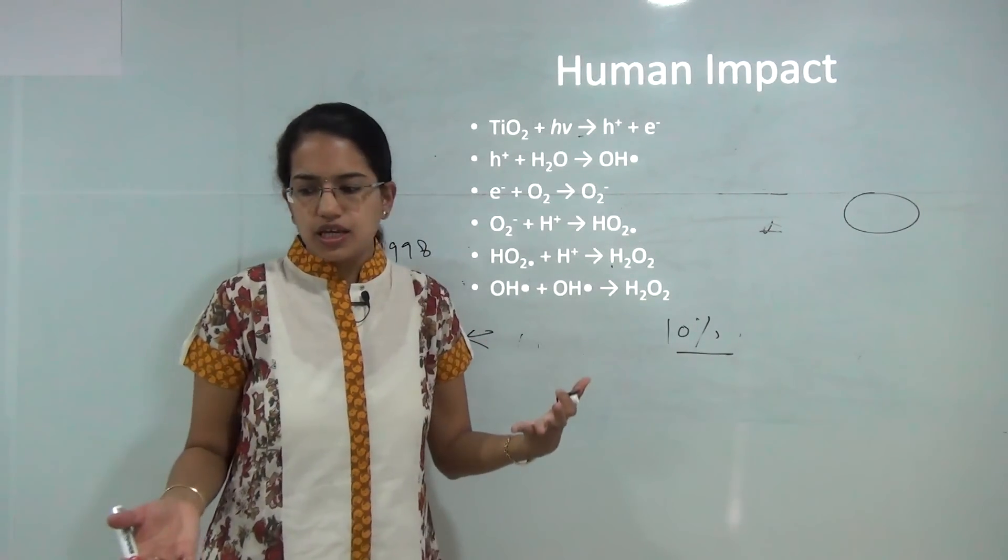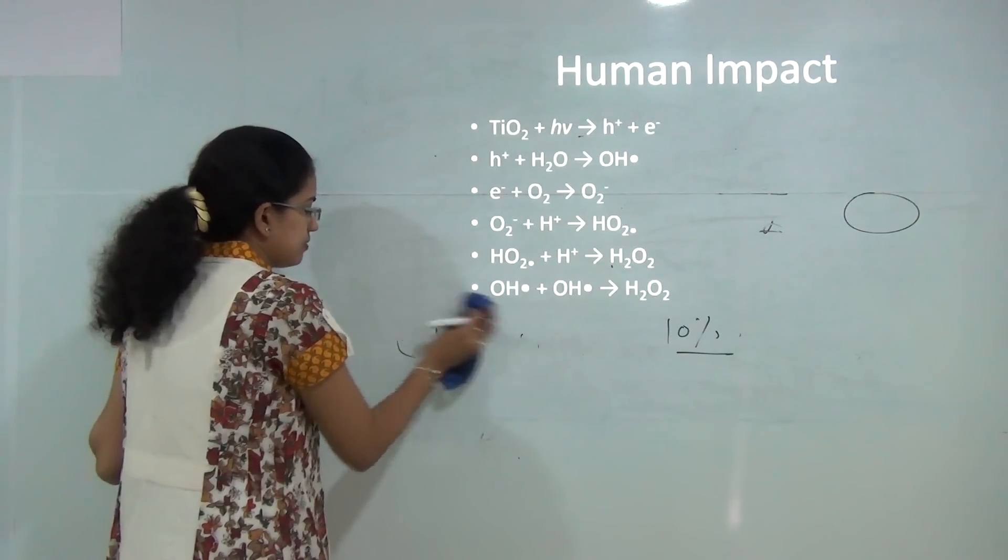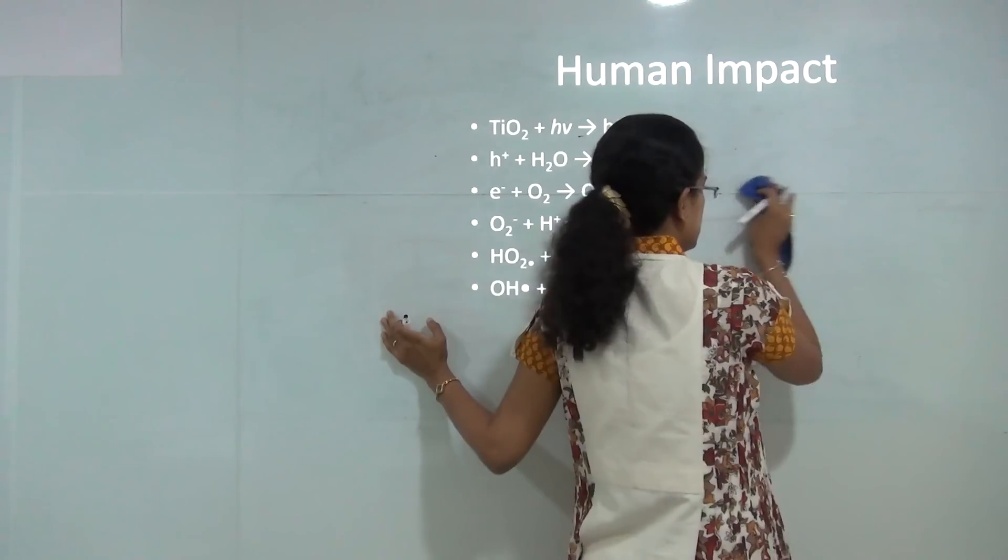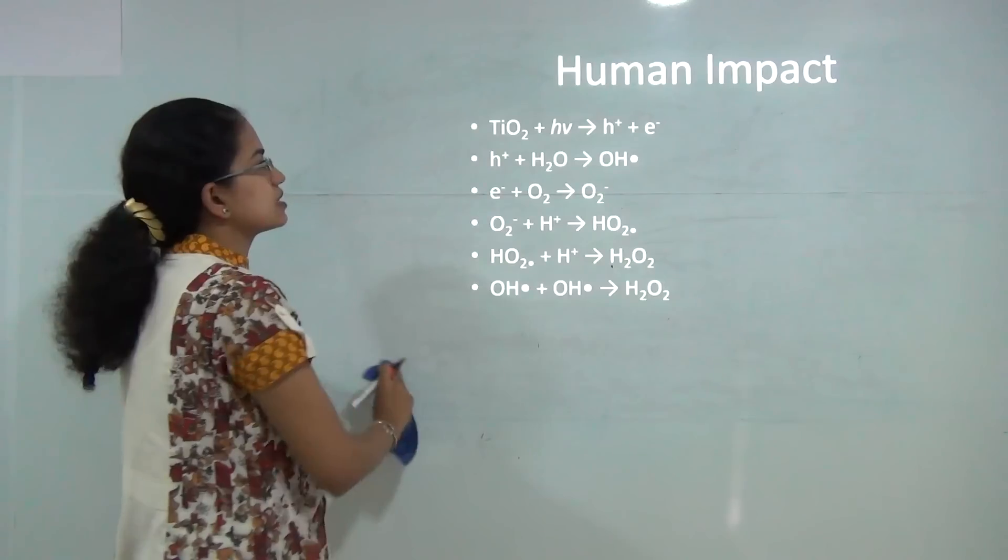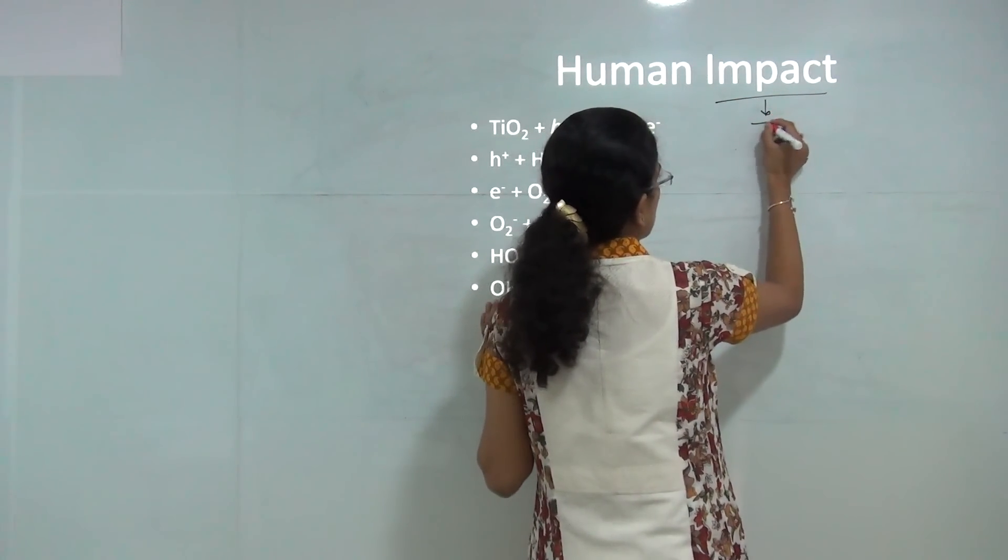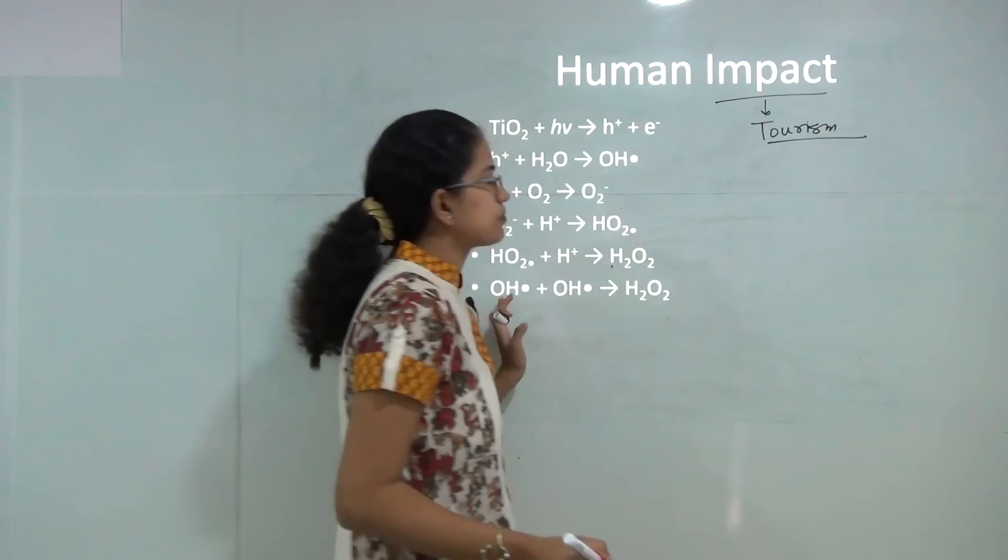How do we human beings affect the coral? This is one of the very interesting case studies that has been done to understand that how human beings only by means of tourism as one of the major activities have harmed the coral population. Tourism is one of the major activities that occur in the region